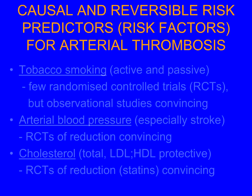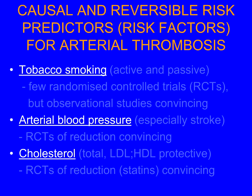So let's turn to the causal and reversible risk predictors — which, because they're causal, we can now call risk factors. And these are the big three: tobacco smoking, arterial blood pressure, and cholesterol. These explain about 90% of differences between individuals living in the same country all around the world.